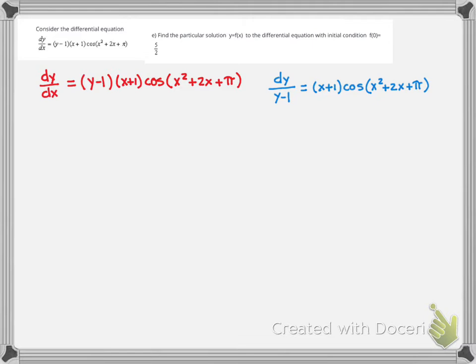In this question I've already started to separate by dividing by y minus 1 and multiplying by dx. Over here we have the integral of both sides. The integral of y minus 1 is natural log of absolute value of y minus 1.